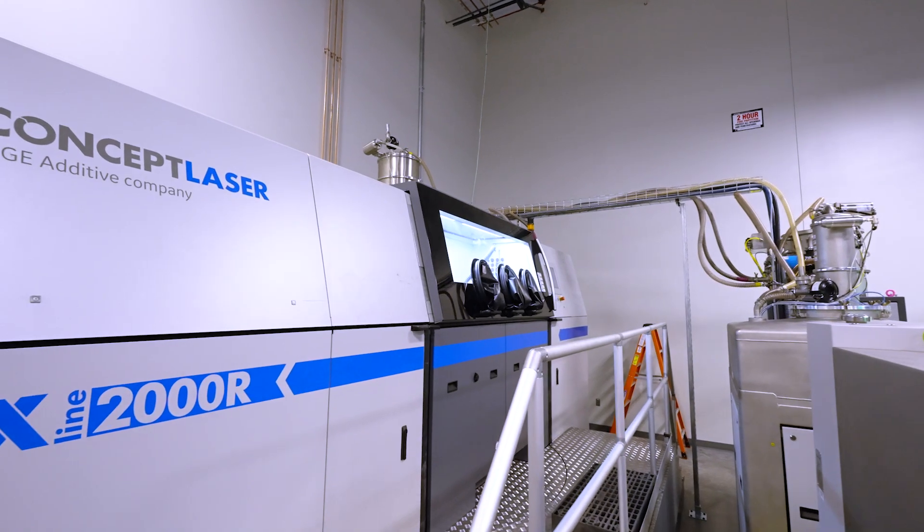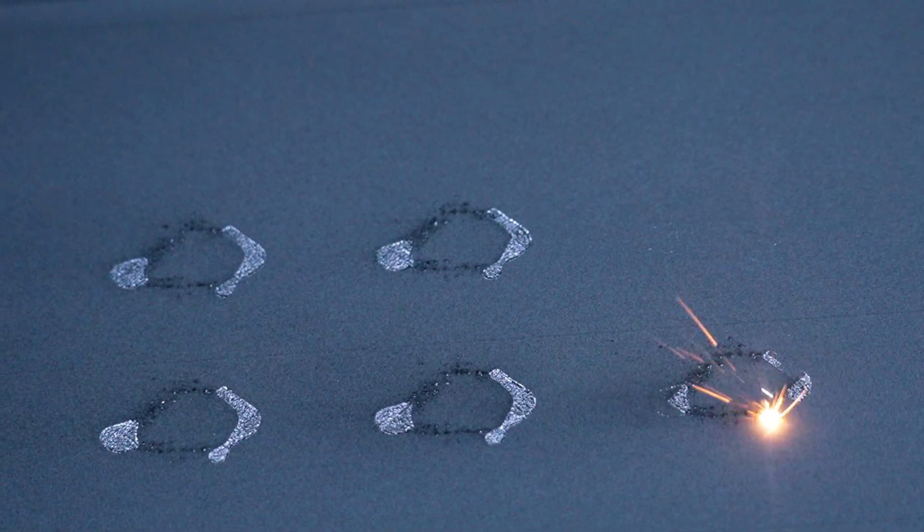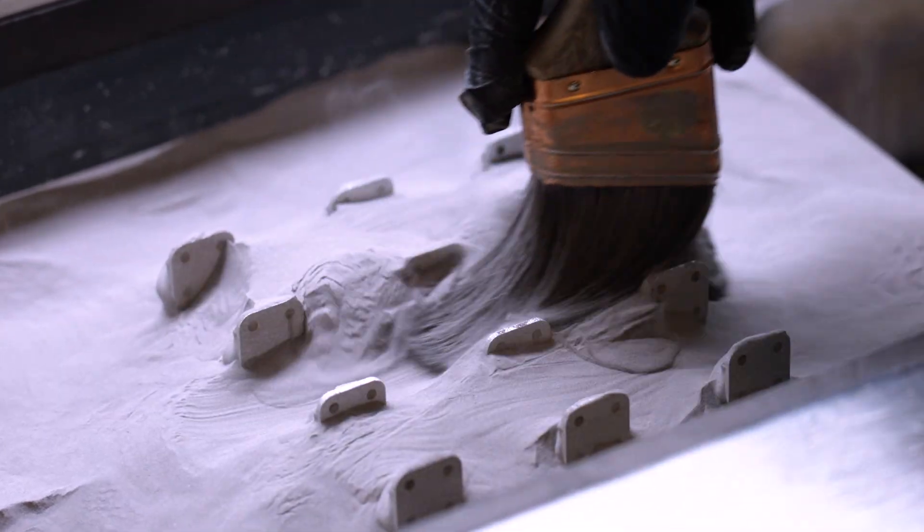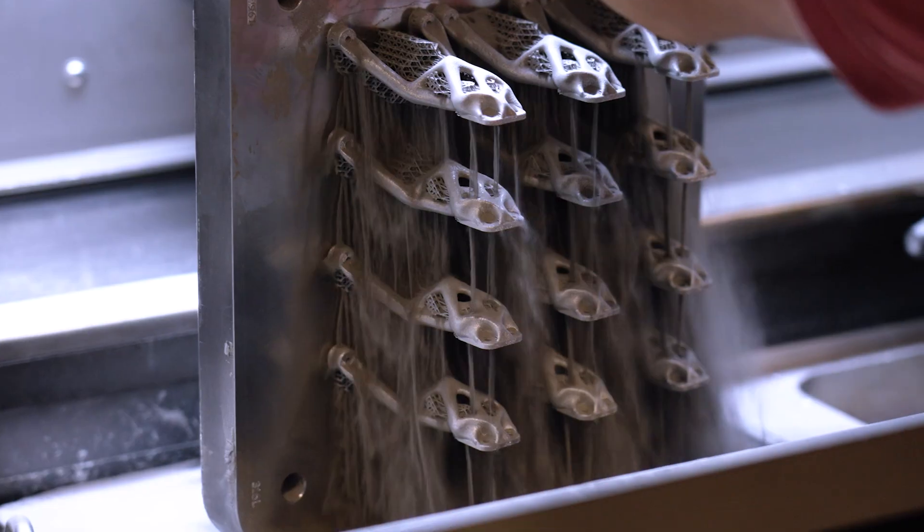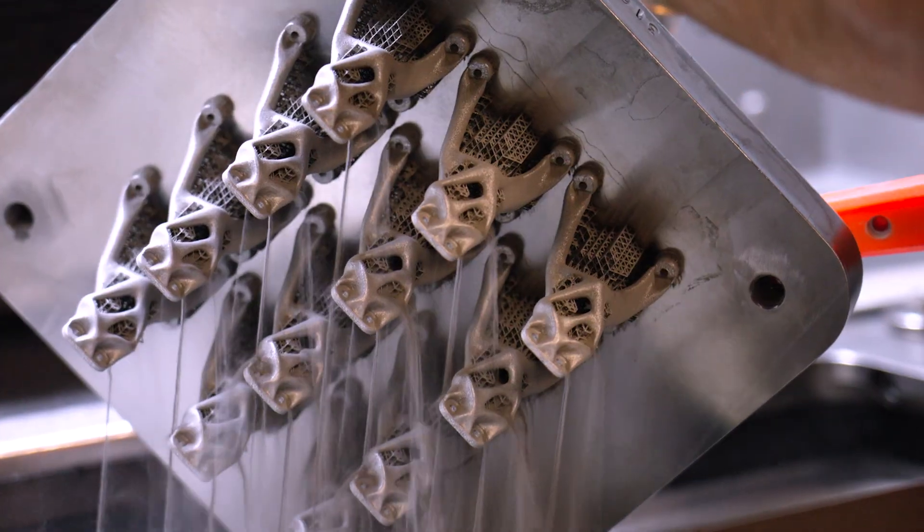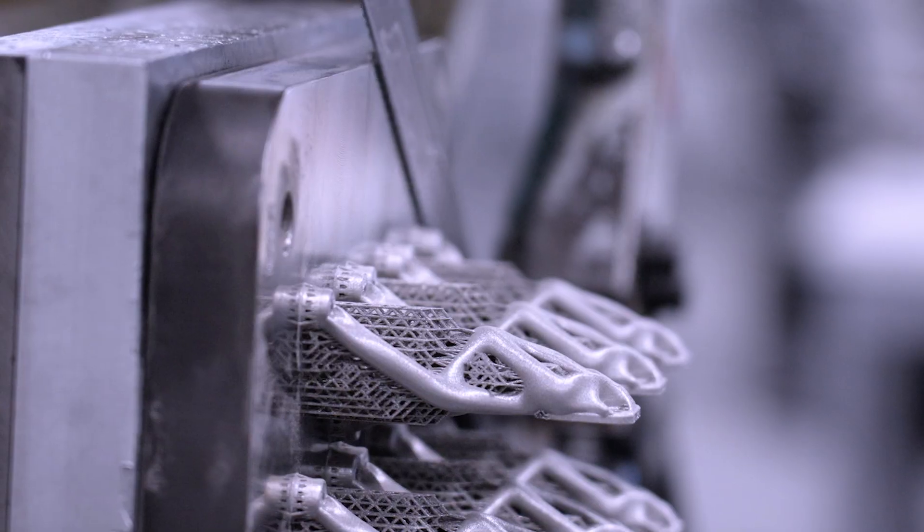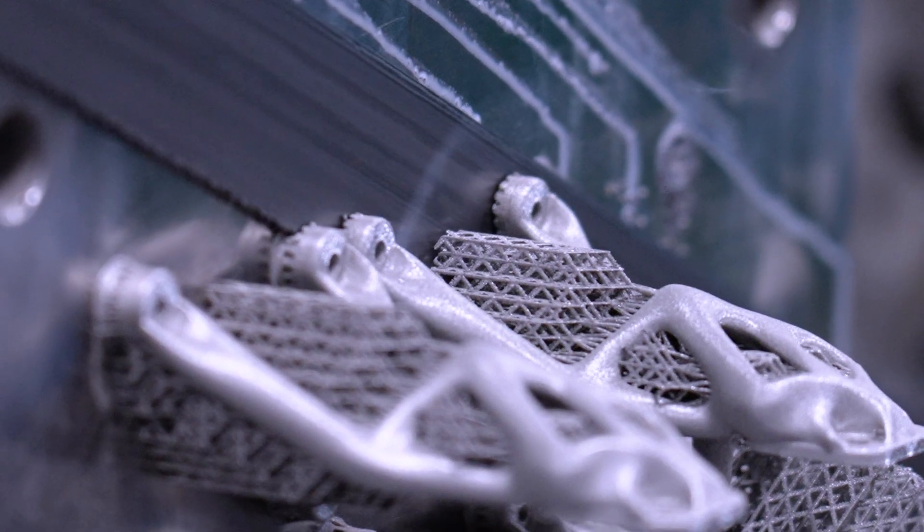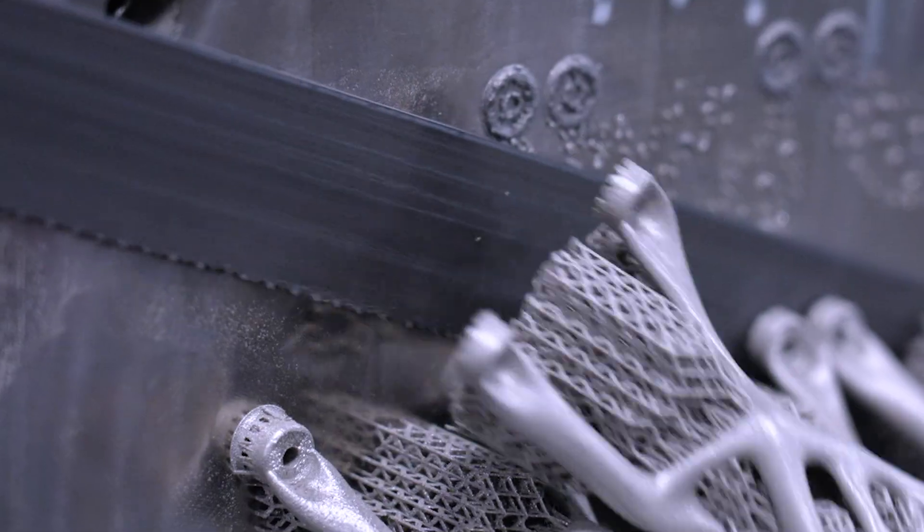Once the build is complete, the build plate is removed and placed in an oven for heat treatment. This alleviates internal stresses in the parts that develop during the sintering process. We have several tools that we use to machine parts off the build plate and remove support structures.